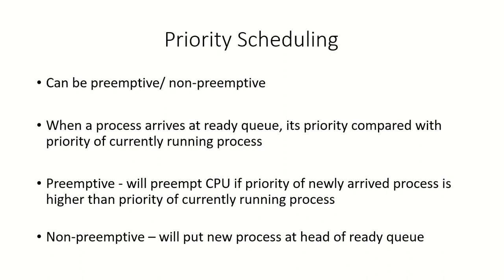Priority scheduling can be implemented as a preemptive or non-preemptive algorithm. Preemptive means the CPU can be taken away from a running process. Non-preemptive means once a process gets the CPU, the operating system cannot take it away until the process itself releases the CPU.